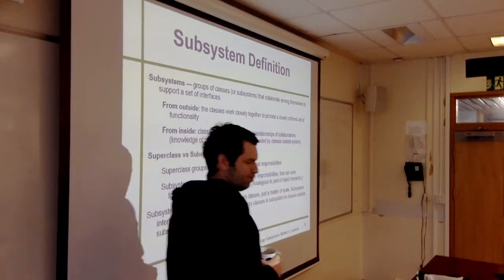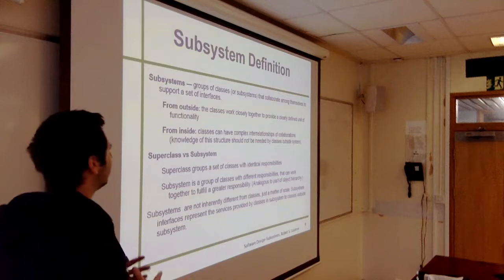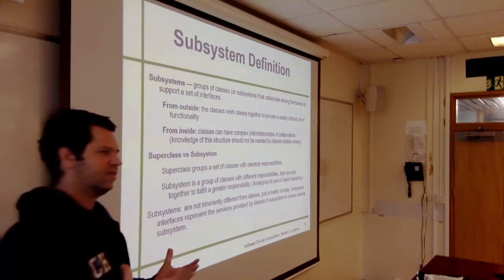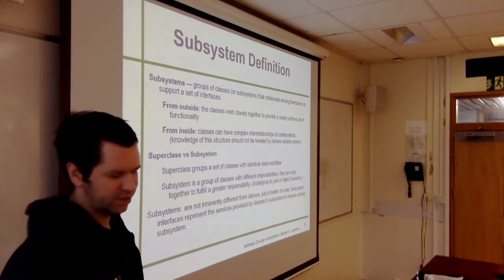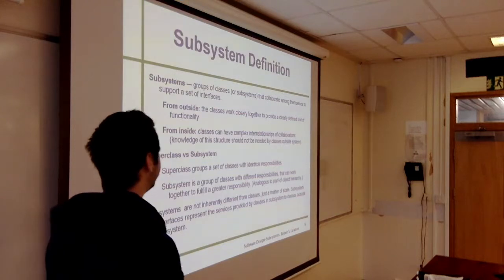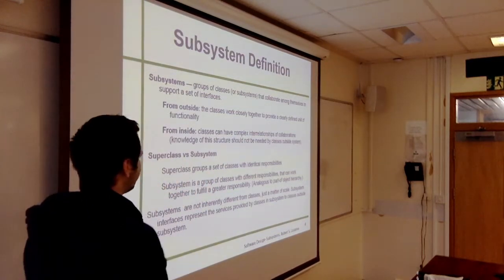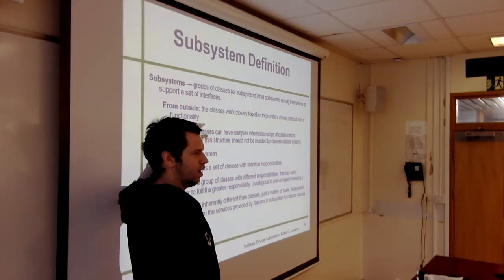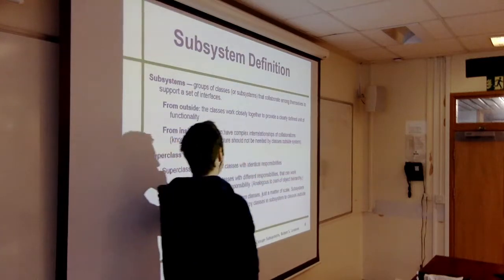What's a subsystem? A subsystem is a group of classes that collaborate with each other to fulfill some larger purpose, or to support a set of interfaces. From the outside of the subsystem, these classes look like one unit — they work closely together to provide a clearly defined unit of functionality. From inside the subsystem, the classes collaborate in sometimes a complex network. The idea is there's complexity inside, but that complexity is hidden outside the subsystem.